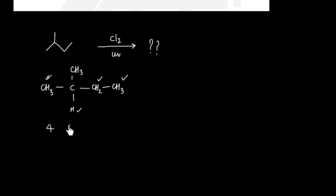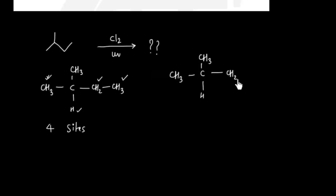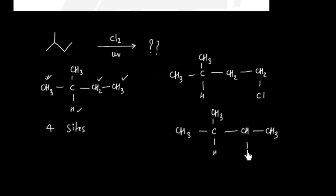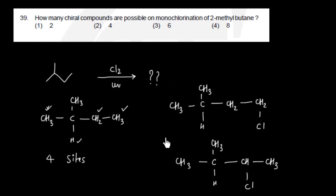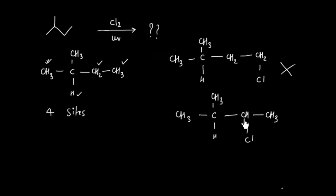Let us replace each hydrogen and see what happens. Replacing the first hydrogen gives CH₃–C(CH₃)(H)–CH₂–CH₂Cl. Replacing the second hydrogen gives CH₃–C(CH₃)(H)–CH(Cl)–CH₃. This first compound is not a chiral compound. But this second one — looking at that carbon — this is a chiral compound, so the corresponding compound is chiral.